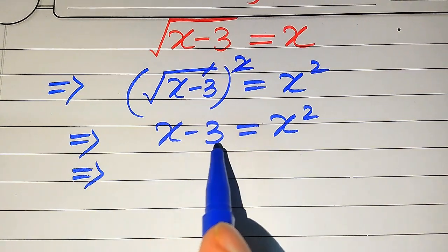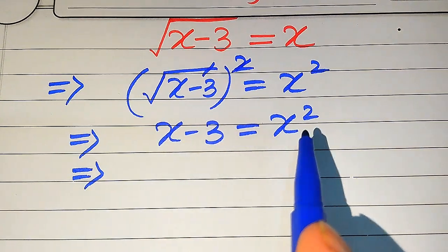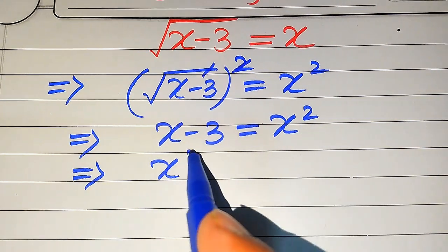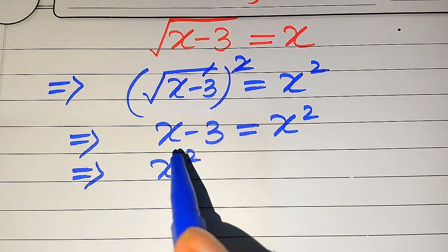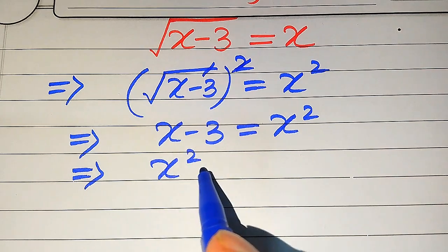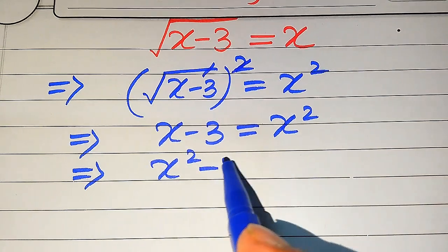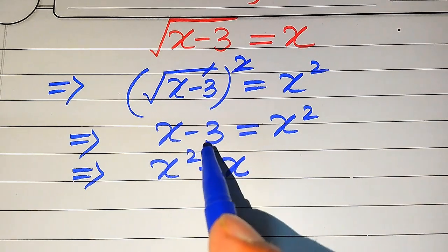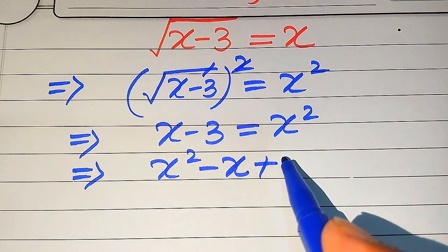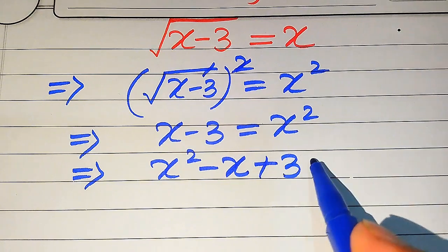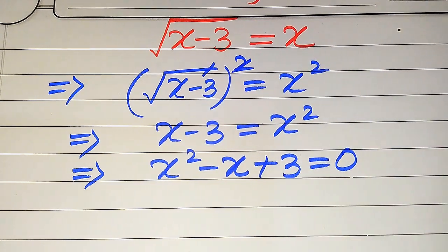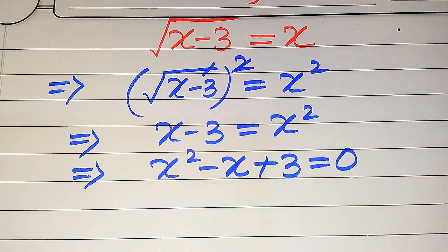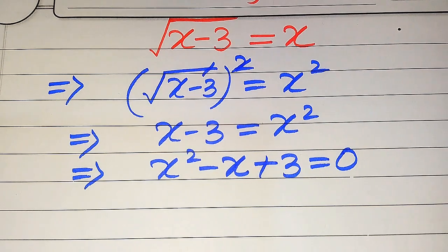In the next step, we move X minus 3 to the right hand side. It becomes X squared, and minus X comes from moving X, and minus 3 becomes plus 3. This whole equation equals 0. We can see that this equation is now quadratic in X.